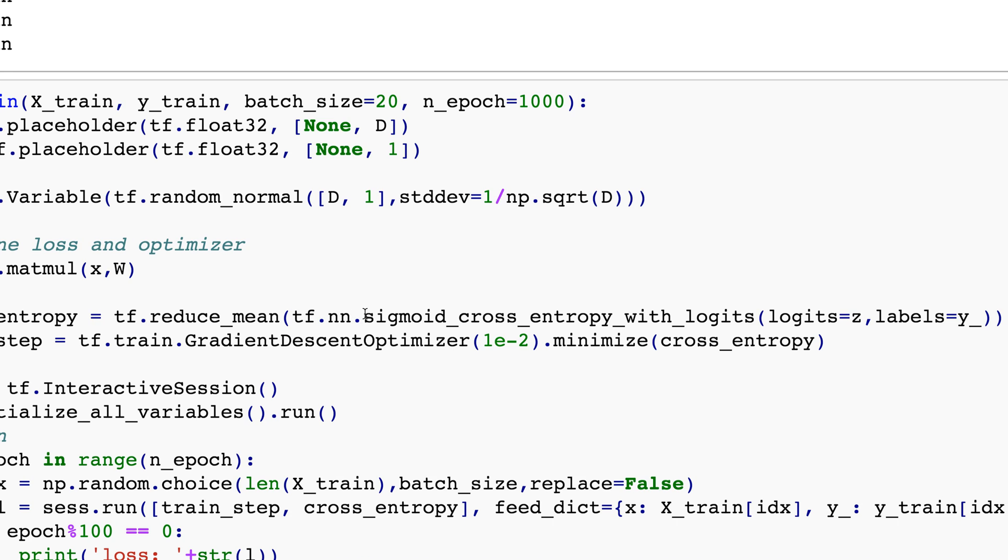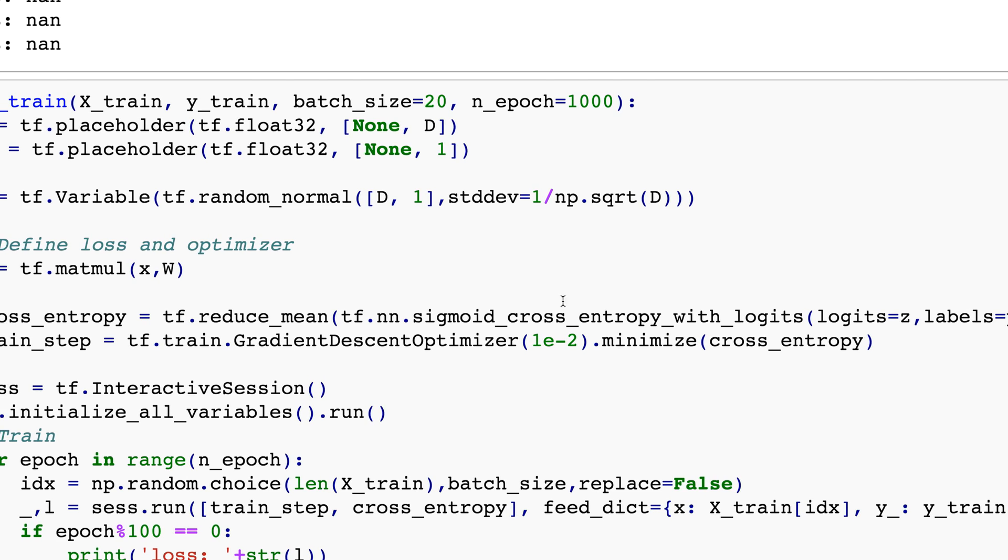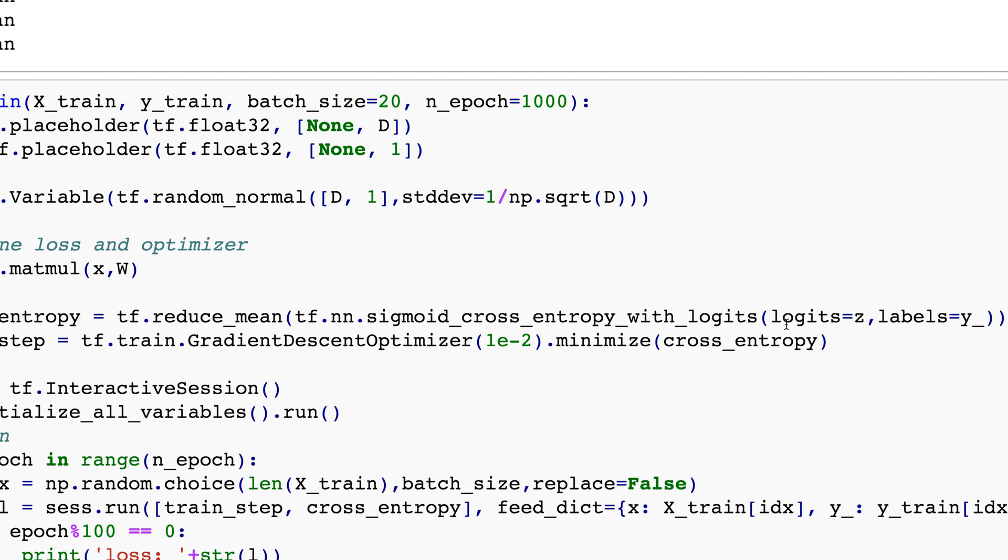So instead TensorFlow has a built-in thing that says sigmoid cross entropy with logits. So logit is this z value over here. And then you say logit is z and the labels are whatever I feed in.